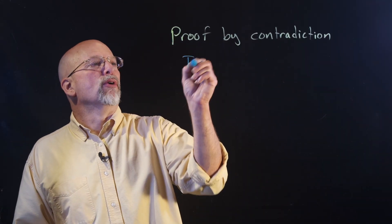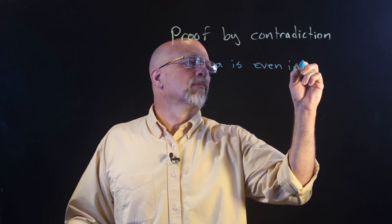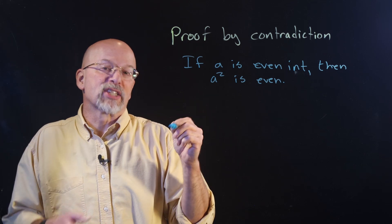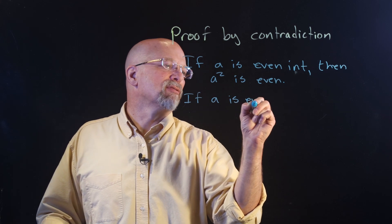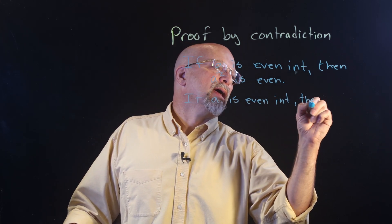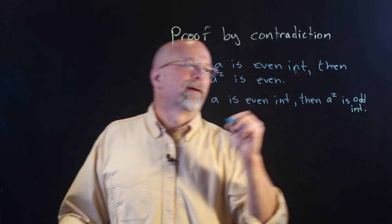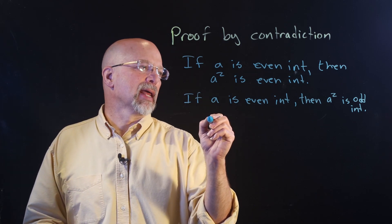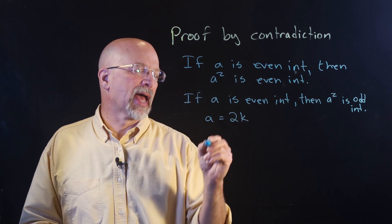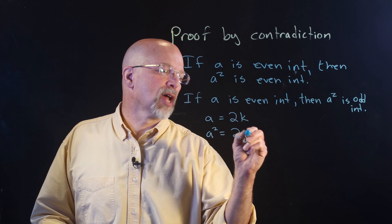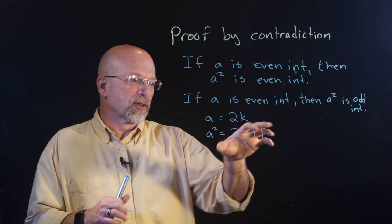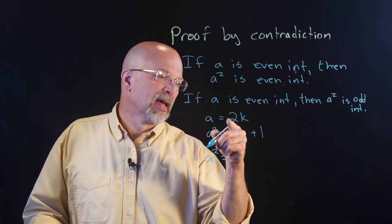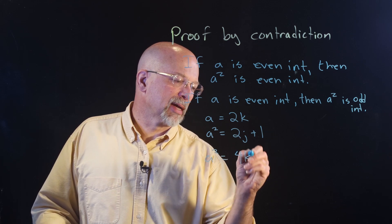So remember, we did that proof: if A is an even integer, then A squared is even. Proof by contradiction says: why don't we try to prove if A is an even integer, then A squared is an odd integer? Let's make sure our definitions are proper. In order for this to be true: A is even, so A equals 2K for some integer K, and we say A squared equals 2J plus 1 for some integer J — the format for odd integers. Let's take A squared and generate it from the first line: that gives us 4K squared.